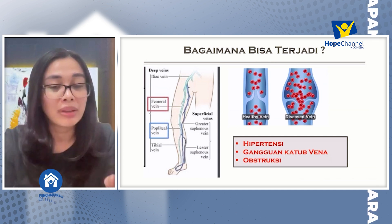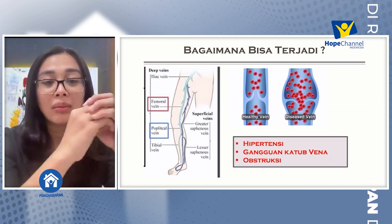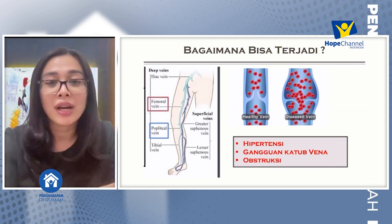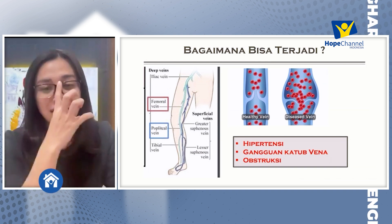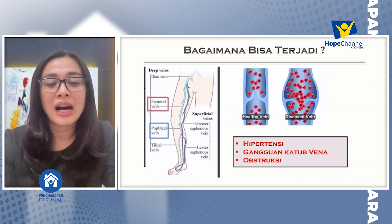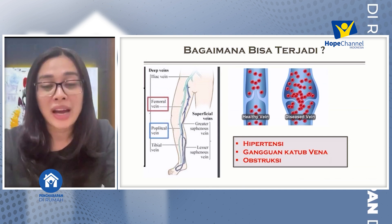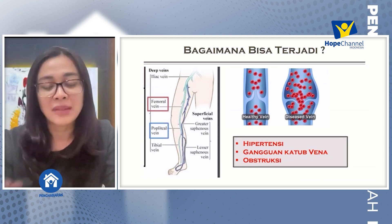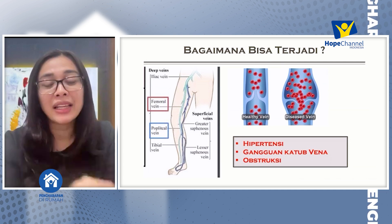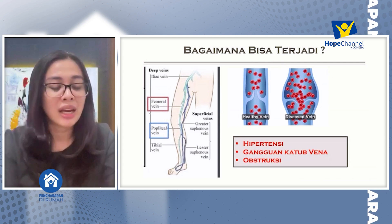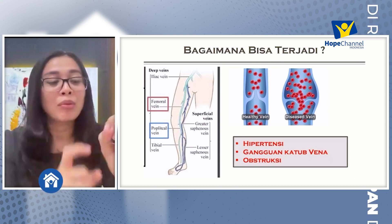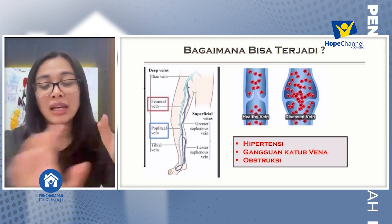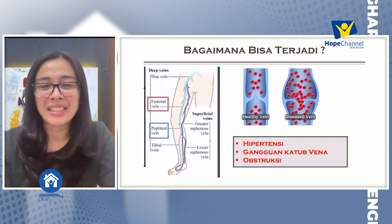Pada pasien dengan hipertensi, maka pembuluh darahnya akan menjadi membesar, sehingga menyebabkan seseorang terjadi varises. Kemudian adanya gangguan katup vena. Dan yang ketiga adalah obstruksi. Obstruksi ini berkaitan dengan hipertensi, sama halnya apabila suatu pipa ada yang menyumbat, pasti akan menyebabkan tekanan menjadi meningkat. Jadi prinsipnya sama dengan hipertensi.